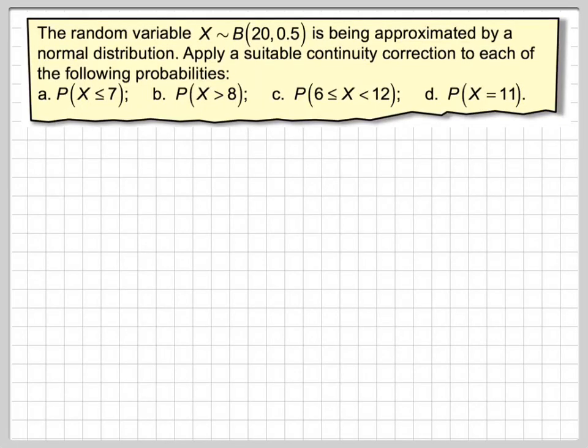Hi, in this video we're going to look at the idea of approximating a binomial distribution to a normal distribution and the idea of using what's known as a continuity correction.